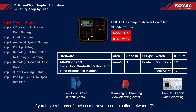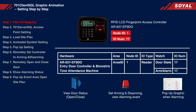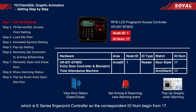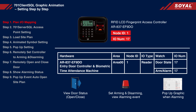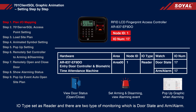If you have a bunch of devices — moreover a combination between I/O and access controller devices all in one system — it is better to plan I/O mapping ahead to make it easier during the setting at a later time. For this example, the controller we are using is AR837EF9DO, which is an E-Series fingerprint controller. So the corresponding I/O number begins from 17. Here we will set area 00, node ID 1, I/O number 17, and I/O type set as reader. There are two types of monitoring: door state and arm/alarm.